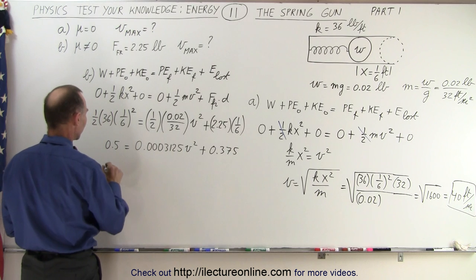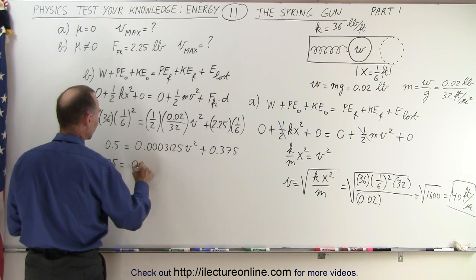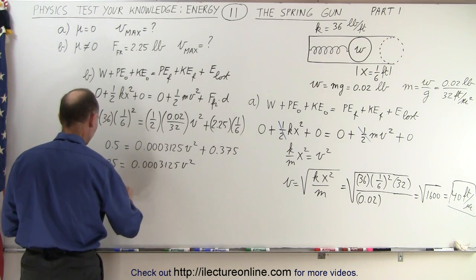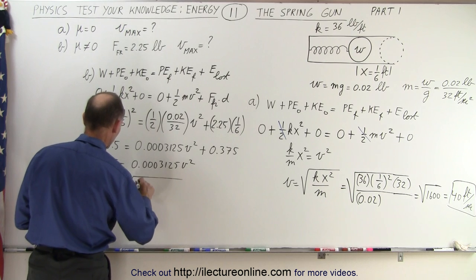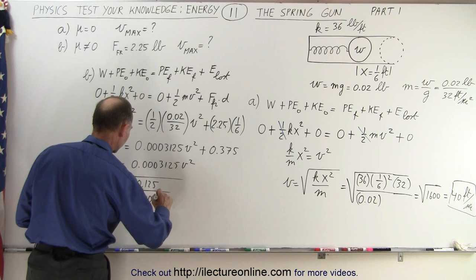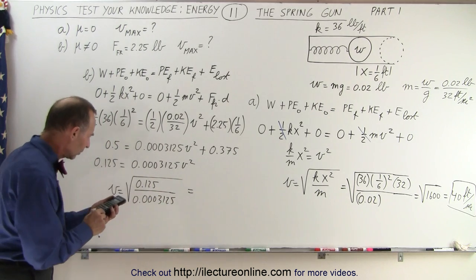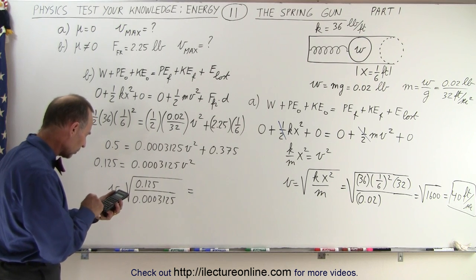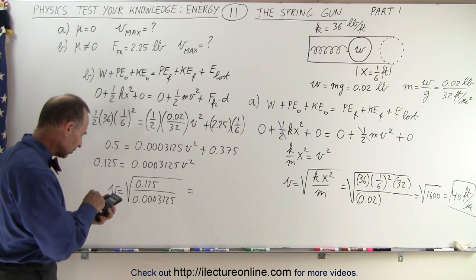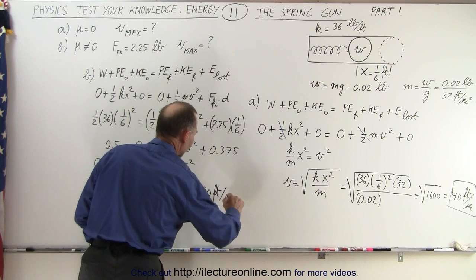So subtracting that from both sides, that would be 0.125 is equal to 0.0003125 v squared, or v is equal to the square root of 0.125 divided by 0.0003125. Let's see what that's equal to: 0.125 divided by 0.0003125, take the square root of that, which is 20 feet per second.